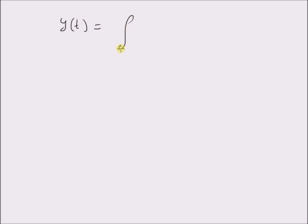Hello, welcome. In this short video, let us look at an example illustrating how to derive the impulse response from a system equation. We will also look at validating the result. Given the following system equation: y(t) = integral from minus infinity to t of e^(-(t-τ)) · x(τ-2) dτ. This is the system equation, and we want to derive the impulse response and validate the result.